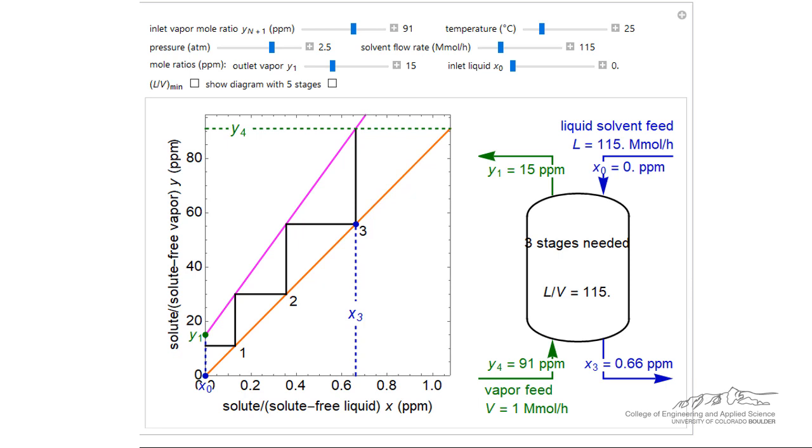This ordered pair is on the operating line since both streams are on the same side of the top stage. The slope of the operating line is fixed by the ratio of the liquid to vapor molar flow rates, L over V. For the initial conditions in this dynamic simulation, three equilibrium stages are required to achieve the desired separation. Stages are counted off by stepping between the operating line and the equilibrium line.